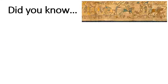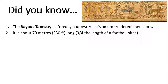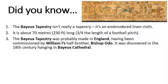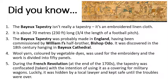Did you know that the Bayeux Tapestry is not actually a tapestry at all? It's an embroidered linen cloth, about 70 metres long. It was made in England, having been commissioned by William's half-brother. It's made from coloured vegetable dyes and is divided into 50 panels. It almost got lost during the French Revolution, where it was going to be used to cover military wagons, but luckily it was hidden by a local lawyer and kept safe until everything calmed down.